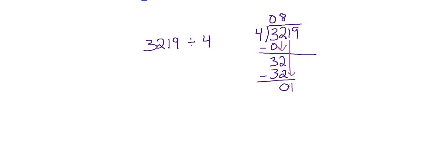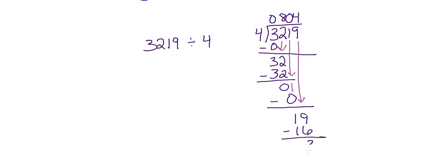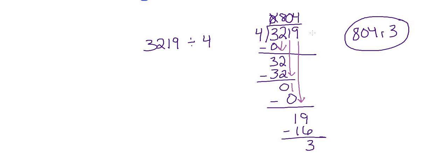How many times can four go into one? It can't, so we put another zero up there. Four times zero is zero; one minus zero is one. We carry that last number down and we have 19. How many times can four go into 19? Four times four is 16 and four times five is 20 — we can't go over 19, so it's four. Four times four is 16; 19 minus 16 is three. Our final answer is 804 remainder 3 — that's our quotient. We don't include the leading zero; just 804 remainder 3.